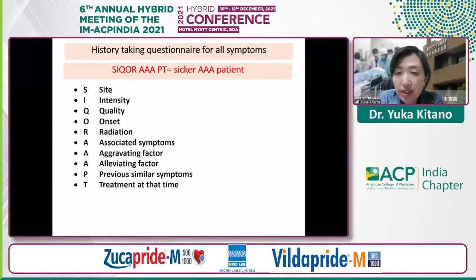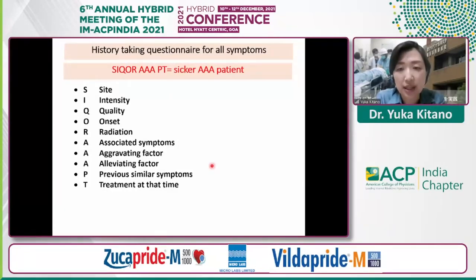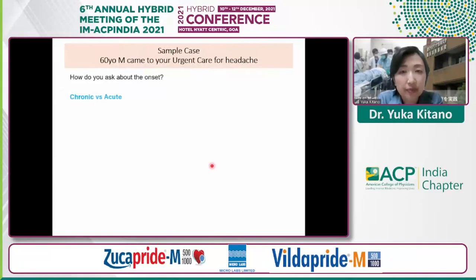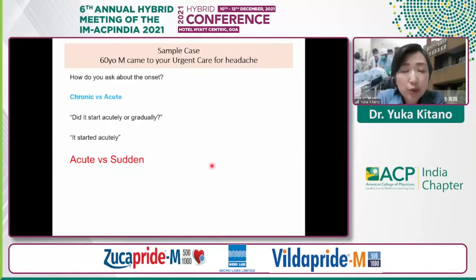When dealing with any emergency or urgent care patient, history is of utmost importance even in our current era of advanced imaging technology. We use this format at our facility as a consensus: site, intensity, quality, onset, radiation, associated symptoms, aggravating and alleviating factors, previous similar symptoms, and treatment at that time — SIQORAAST. Among those, when taking history of headache, onset is of utmost importance. When you ask 'Did it start acutely or gradually?' the patient may answer 'acutely,' but that does not tell us the most important information. We need to ask whether it started acutely or suddenly, because the differential is totally different.